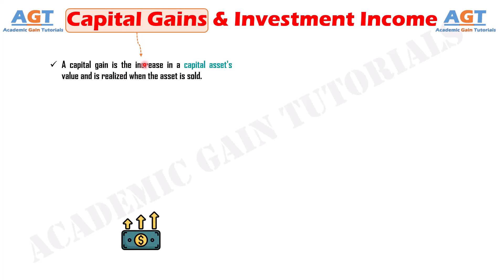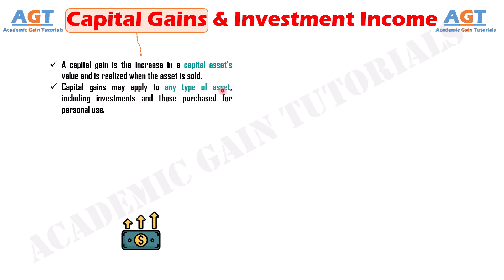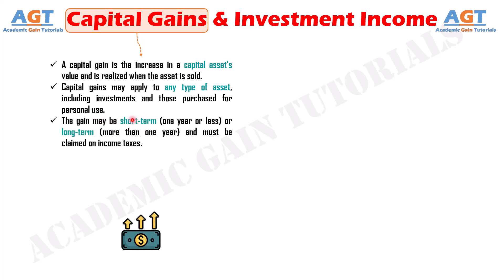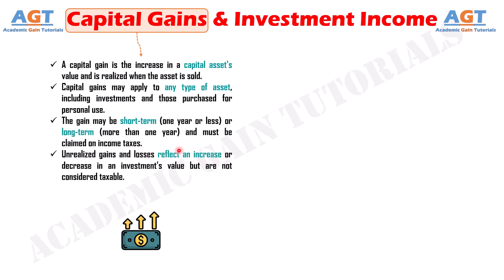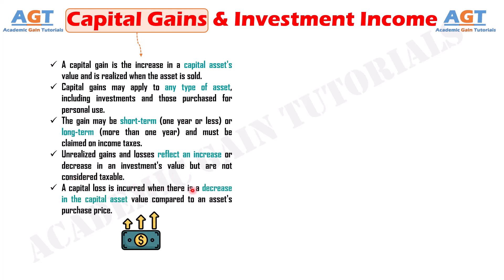A capital gain is the increase in a capital asset's value and is realized when the asset is sold. Capital gains may apply to any type of asset, including investments and those purchased for personal use. The gain may be short-term, one year or less, or long-term, more than one year, and must be claimed on income taxes. Unrealized gains and losses reflect an increase or decrease in an investment's value but are not considered taxable. A capital loss is incurred when there is a decrease in the capital asset value compared to an asset's purchase price.